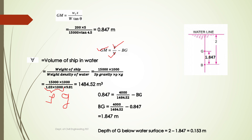From the figure, the water line is shown and the center of buoyancy B is 2 meters below the water line. From B to G the distance BG = 1.847 meters. Therefore, the depth of G below the water surface = 2 − 1.847 = 0.153 meters. We have now solved for both the metacentric height (GM = 0.847 m) and the position of the center of gravity (0.153 m below water surface). Thank you.